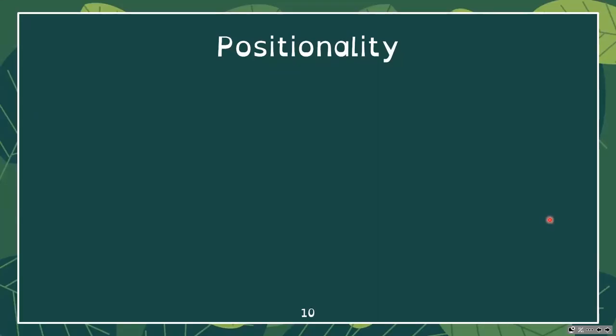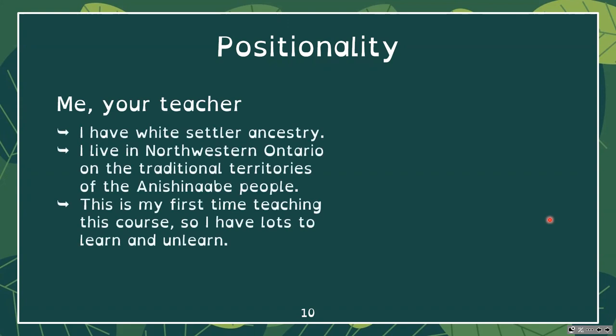I like to position myself within our context and society before diving into subject matter, because this shapes how I teach science and what I think is important. I have white settler ancestry — I am a white person, so I have white privilege, and that shapes how I've experienced education and how I teach. I recognize that and try to do things differently and integrate experiences that are not my own, though that is challenging and I don't get it right all the time. I do live in Northwestern Ontario on the traditional territories of the Anishinaabe people, so I am attempting to learn from those around me and the culture around me to integrate that into my ways of teaching.